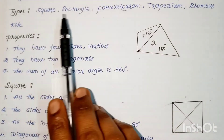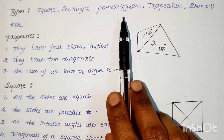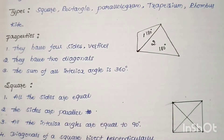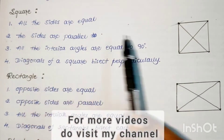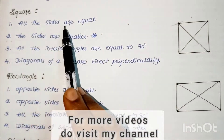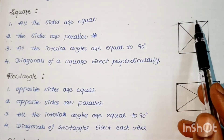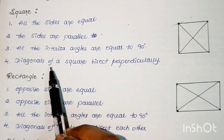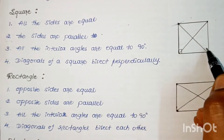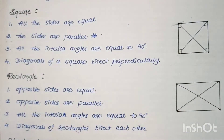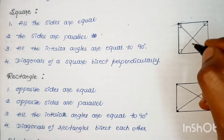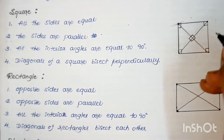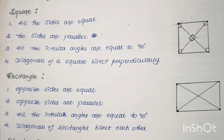Next we'll see the properties of square, rectangle, parallelogram, trapezium, rhombus, and kite. A square is a quadrilateral in which all the sides are equal, all pairs of opposite sides are parallel, and all interior angles are equal to 90 degrees. The diagonals of a square bisect each other perpendicularly — the angle formed at the intersection is 90 degrees.